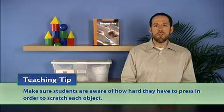Hand out a copy of Activity Sheet 7, which you collected at the end of Session 1, to each student, and inform students they're going to test the relative hardness of objects by scratching the objects with a plastic pen cap in pairs. Make sure students are aware of how hard they will have to press in order to scratch each object.